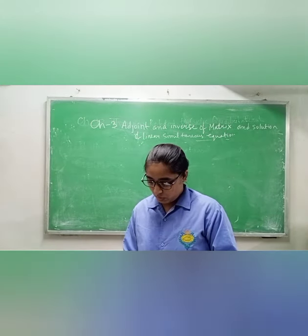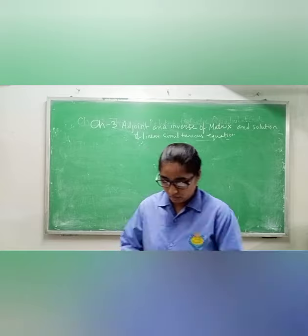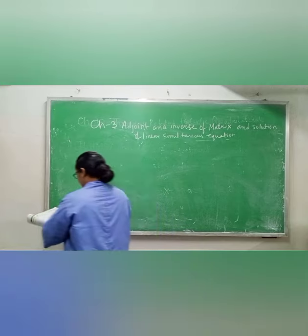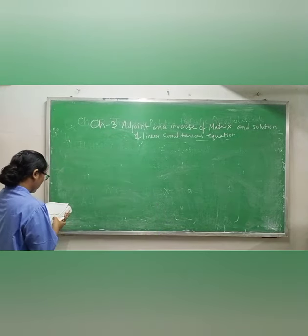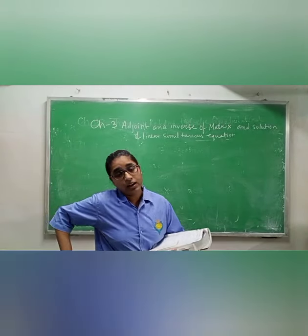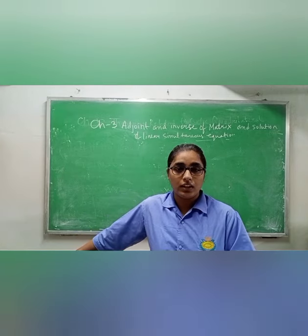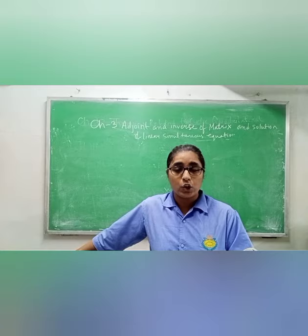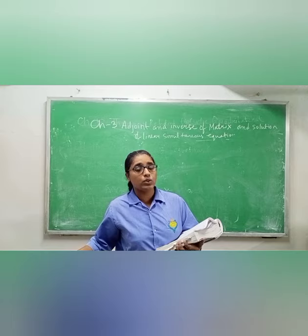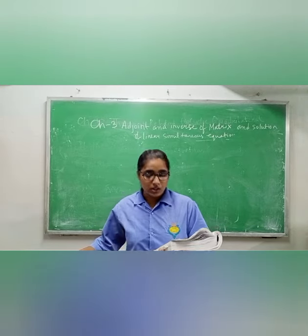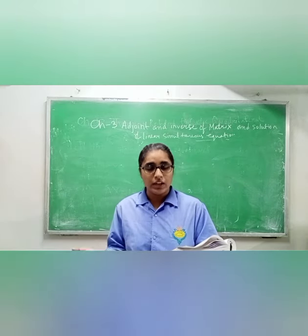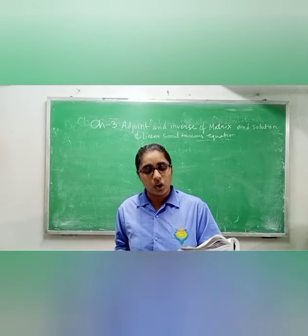Short answer question 2.1: Using the matrix method, show that the equations 6x − 4y + 1 = 0 and 9x − 6y = 2 are inconsistent. The condition for inconsistency is that det(A) = 0 and adj(A)·B ≠ 0. If this condition is satisfied, then the system is inconsistent. We need to find det(A), adj(A), and multiply adj(A) with B.